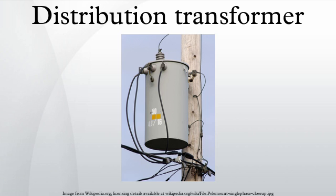Distribution transformers may include an off-load tap changer to allow slight adjustment of the ratio between primary and secondary voltage, to bring the customer voltage within the desired range on long or heavily loaded lines. Pad-mounted transformers have secure, locked and bolted, grounded metal enclosures to discourage unauthorized access to live internal parts. The enclosure may also include fuses, isolating switches, load break bushings, and other accessories. Pad-mounted transformers for distribution systems typically range from around 100 to 2000 kVA, although some larger units are also used.